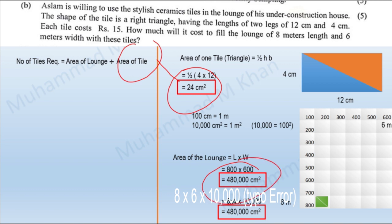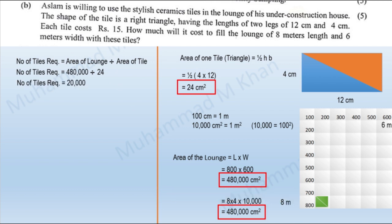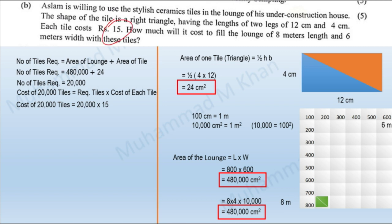Now that we have calculated the area of each tile and the area of the lounge, we can calculate the number of tiles required. Number of tiles = 480,000 divided by 24, which comes out to be 20,000 tiles. The cost per tile is given in the question, so multiplying 20,000 by 15 gives us 300,000, which is the total cost of tiles required to cover the lounge.